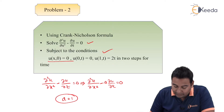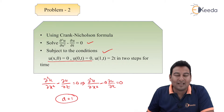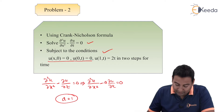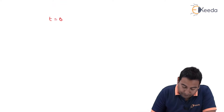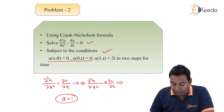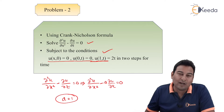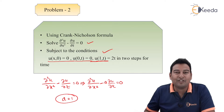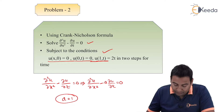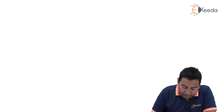Let us check the boundary conditions. The second condition is u(0, t), that means x is 0 — we can't say anything about t. From the third condition it is u(1, t), that means x is 1 and t we can't say anything. Let us draw the table.